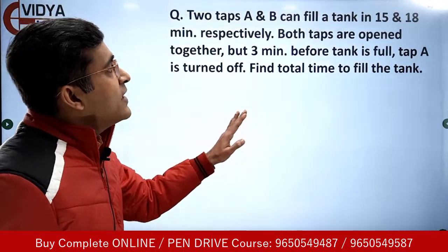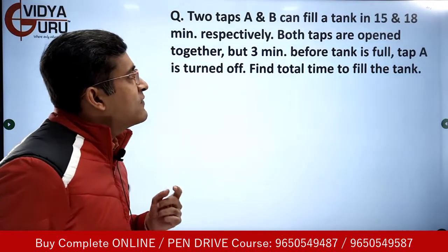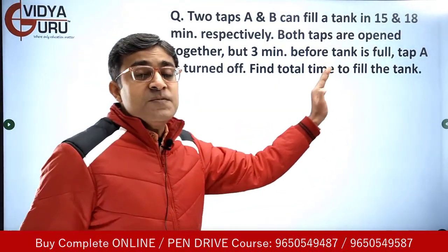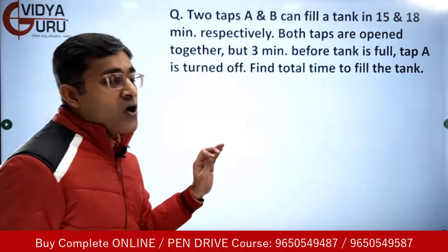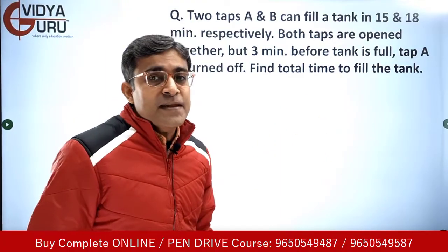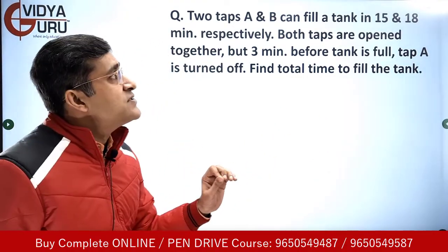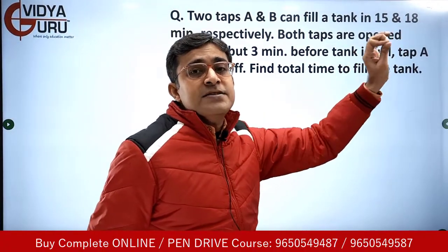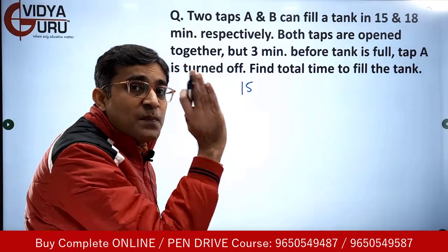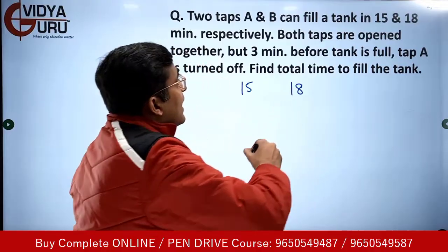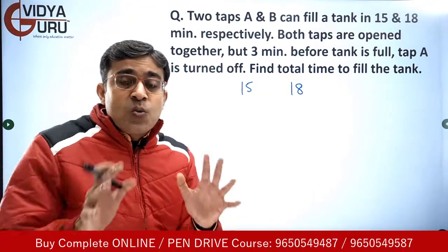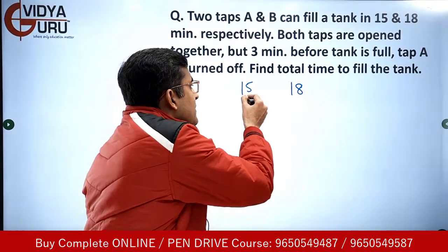Two taps A and B can fill a tank in 15 and 18 minutes respectively. Both taps are open together, but three minutes before the tank is full, tap A is turned off. Find the total time to fill the tank. So first of all, look at these times: A takes 15 minutes, B takes 18 minutes, and tap A is turned off three minutes before the tank is full. What we have to do is first take the LCM of the time taken.